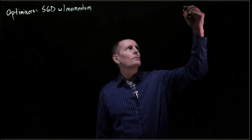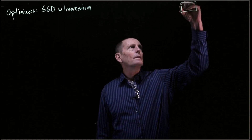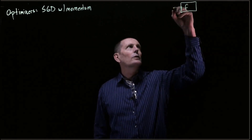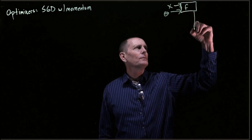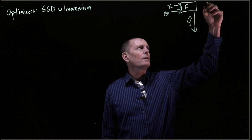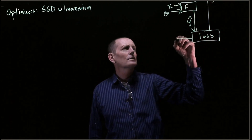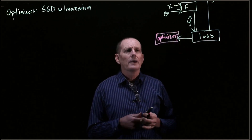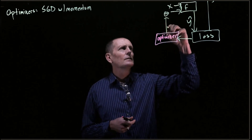Let's talk now about optimizers. We take it back to our diagram, where we've got f with x and theta coming in, y hat coming out, y and y hat feed into our loss. This is where we're going to be working now — in the optimizer that is updating.